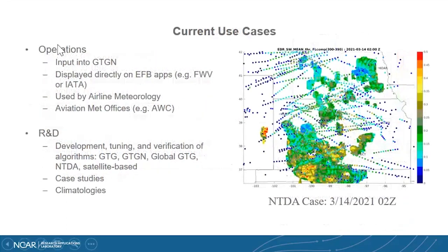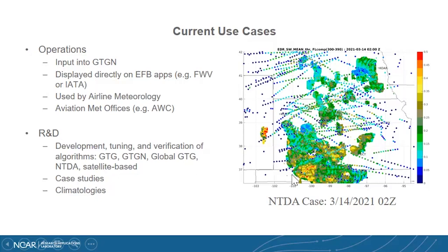Current use cases include operations: EDR is an input into GTGN and is displayed directly on EFB apps such as Delta's Flight Weather Viewer or IATA's Viewer, used by airline meteorology, dispatch, and aviation met offices such as AWC. It's also used in research and development — tuning and verification of algorithms including GTG, GTGN, Global GTG, NTDA, and satellite-based products — and in case studies and climatologies. On the right is a nice case study of NTDA with overlaid in-situ reports.